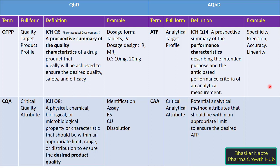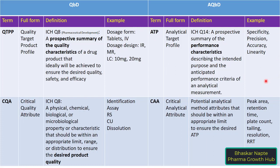So what are those CAA — the important characteristics of the analytical procedure needed to achieve the desired validation parameters or ATP? They can include peak area, retention time, plate count, tailing factor, resolution, and relative retention times. To recap, we have discussed QTPP versus ATP and CQA versus CAA.